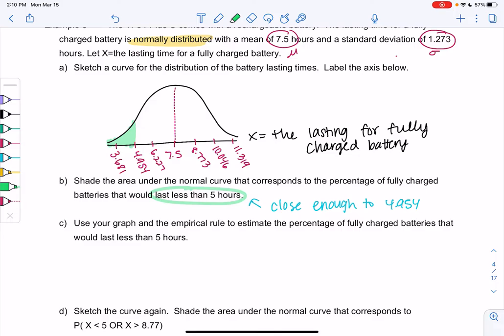And now in part C, let's use the graph and empirical rule to estimate the percentage of fully charged batteries that would last less than 5 hours. So remember in the middle we have one standard deviation, that would be from 6.2 to 8.7, so that's not useful here. So then two standard deviations would be 4.95 to 10.046. Take a second to think, do you remember what percent is between two standard deviations? Back in the empirical rule, that was around 95%. So 95% would be the middle.